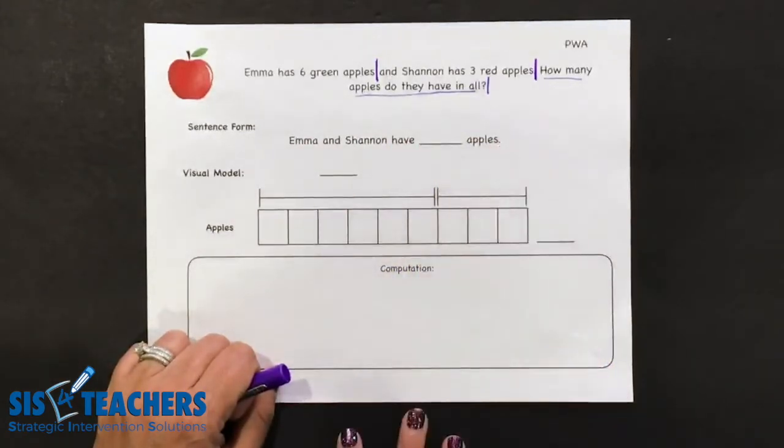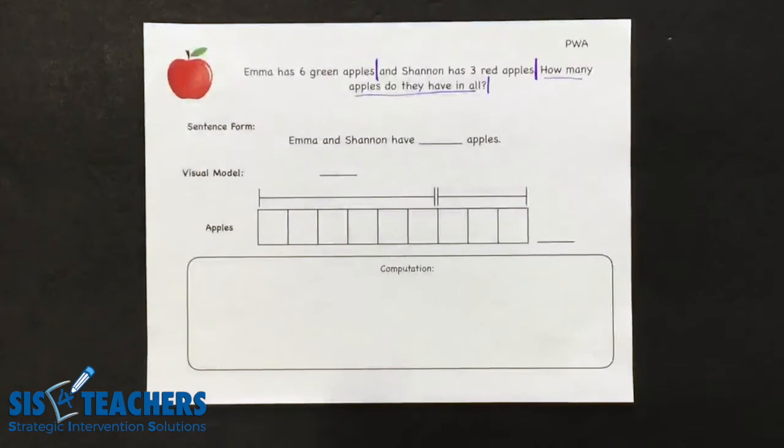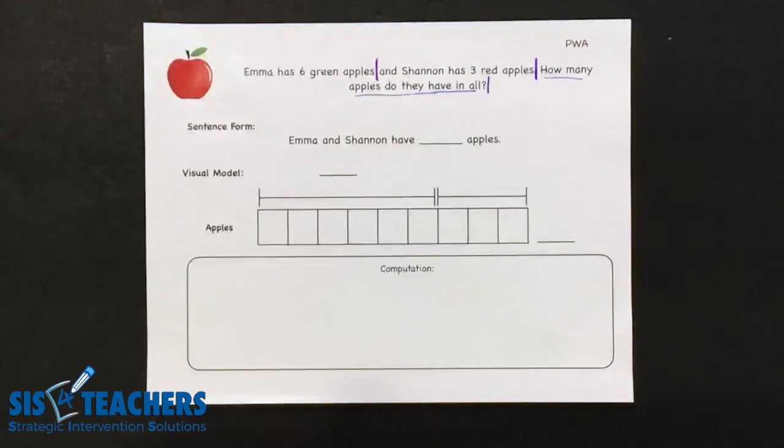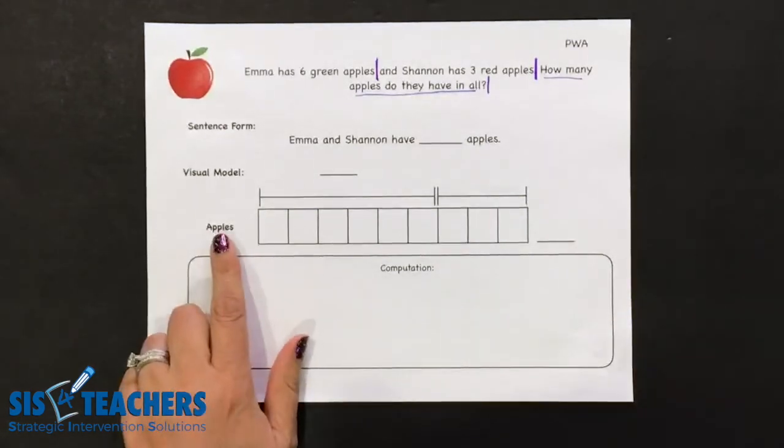If we go back to our step-by-step checklist, I'm going to put a check mark on number two to show we completed step two. Step three says determine the who and or the what involved in the problem. So if we go back to the story problem here, we actually filled in the subject.